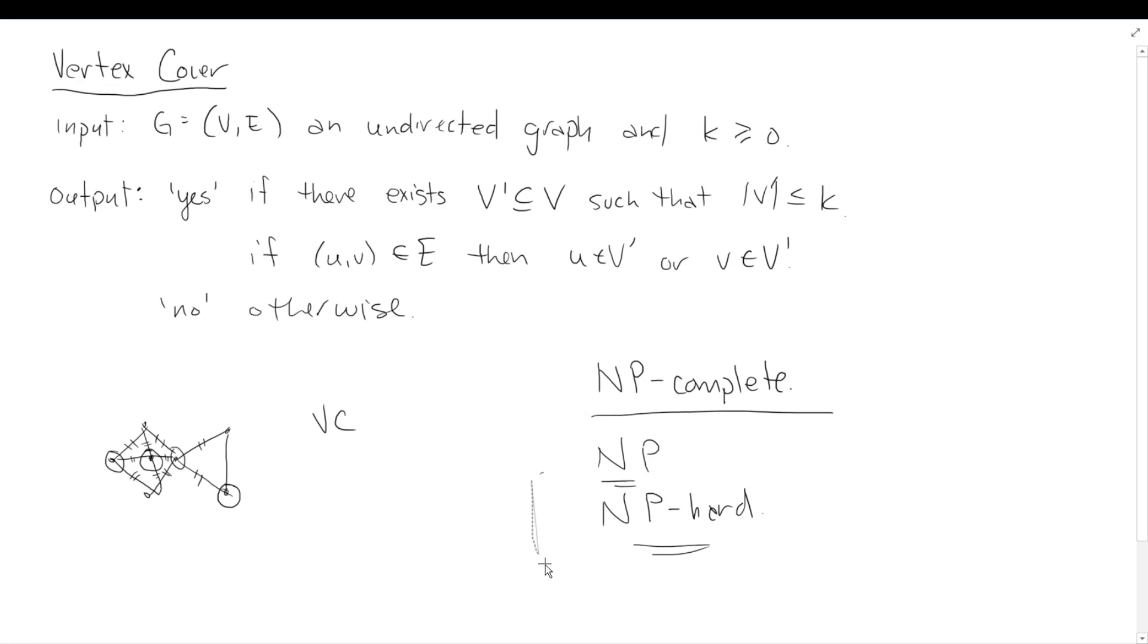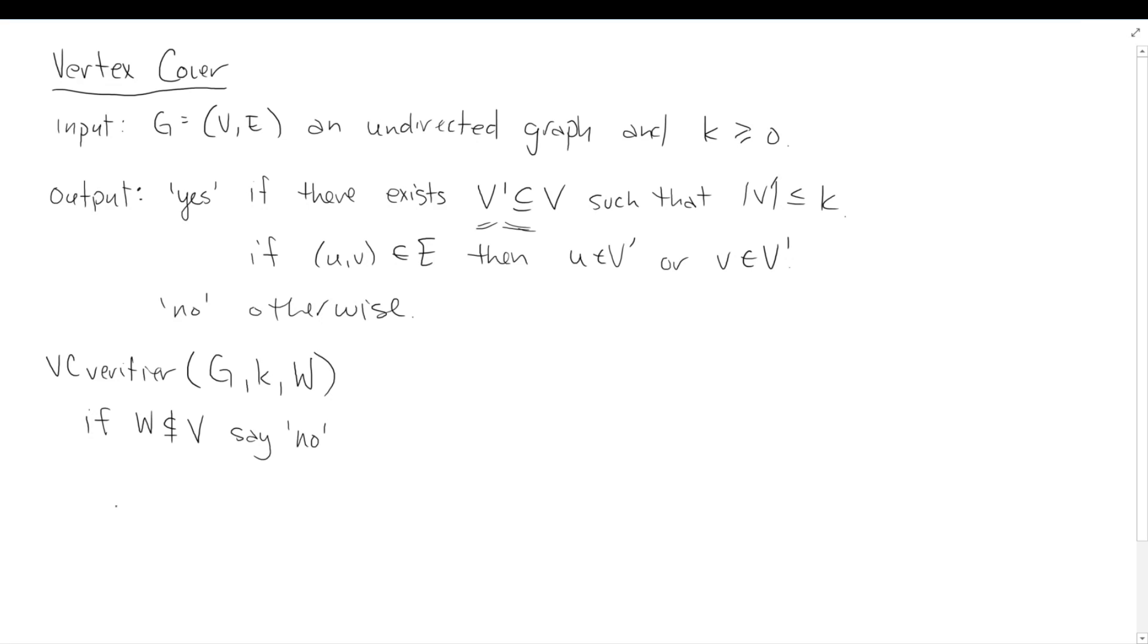So if we want to show it's in NP, we need to build a verifier for it. And remember, a verifier takes an extra piece of input called the proof, the certificate or the witness, whatever is given to us by the prover. And so, the idea here in vertex cover is if our prover were to tell us which set of vertices, then we should be able to check it ourselves. Now, I'm going to still call that W for witness, but my first check is if W is not a subset of V, so I'm doing this part of the check first, say no.